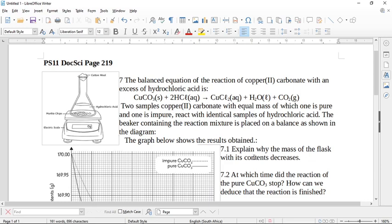This is going to tie into next year when we do reaction rates. These curves will look a lot like that. So what they've said to you is they've got two samples of copper carbonate with equal mass. One is pure, one is impure, and they react it with hydrochloric acid. They've got a picture of a setup similar to this over here. And as you can see, they're on a scale, which they call a balance.